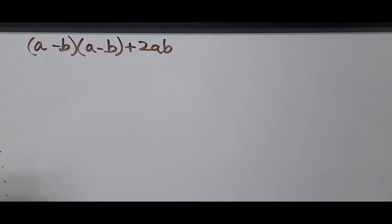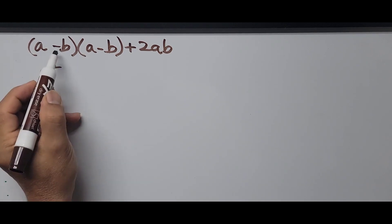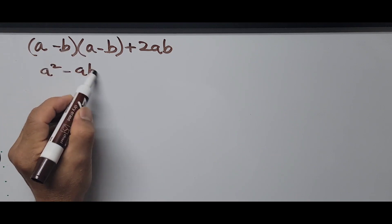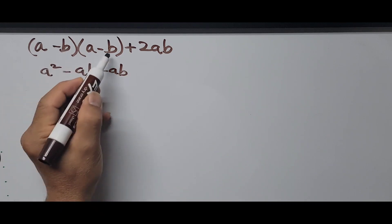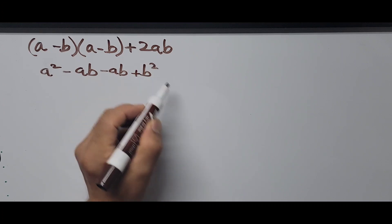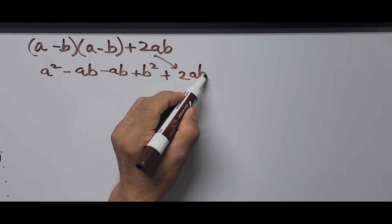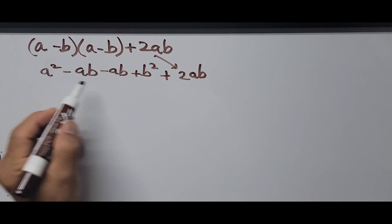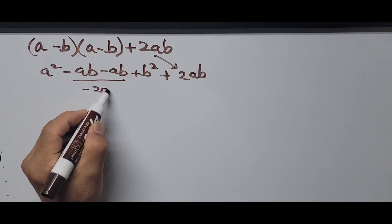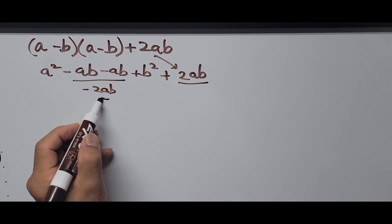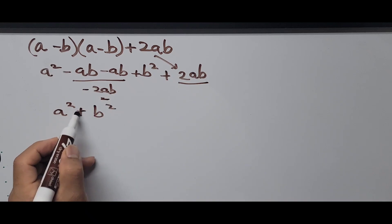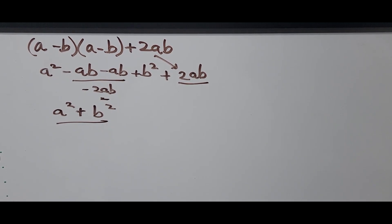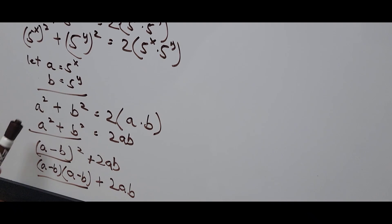Expanding (a minus b)(a minus b) using FOIL: a times a is a squared, minus a times b is negative ab, then a times b is ab, and negative b times negative b is positive b squared, plus 2ab. Combining the middle terms, negative ab and ab cancel, giving a squared plus b squared — confirming our identity.